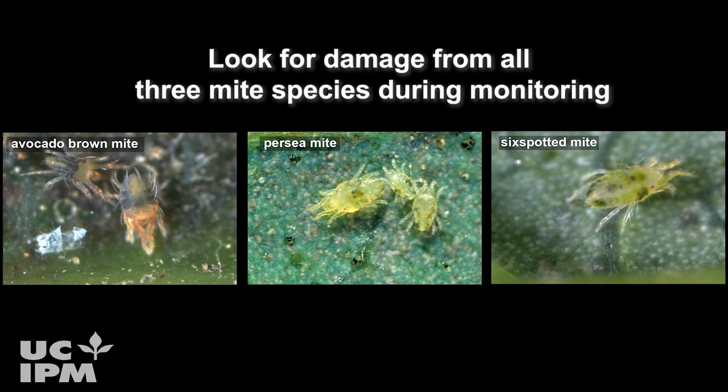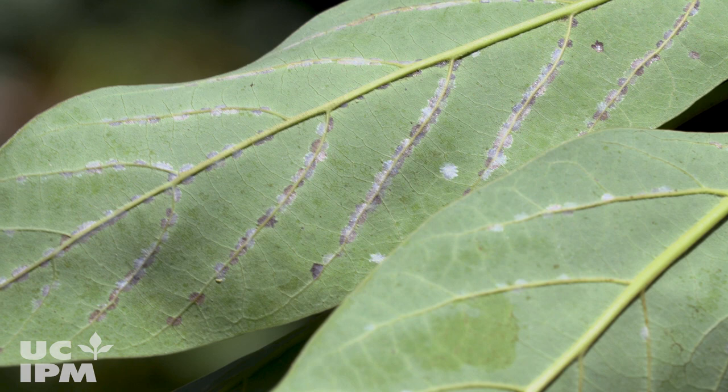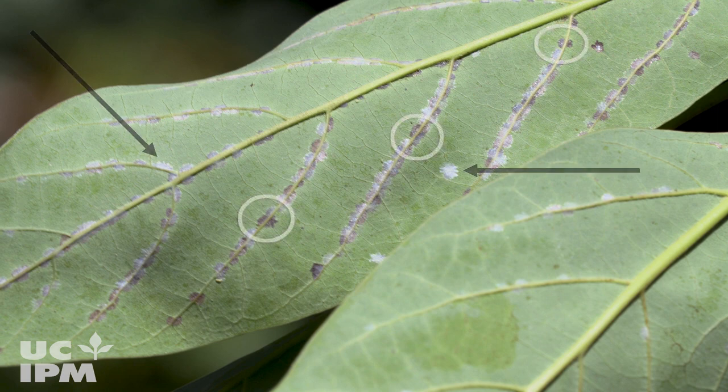Look for avocado brown mite and six-spotted mite damage while you monitor for persea mites to make sure they are not causing an unacceptable amount of damage. Persea mites feed on the leaf undersides, along the midrib and the veins, and they often occur in colonies beneath dense spots of protective webbing, sometimes called their nests.